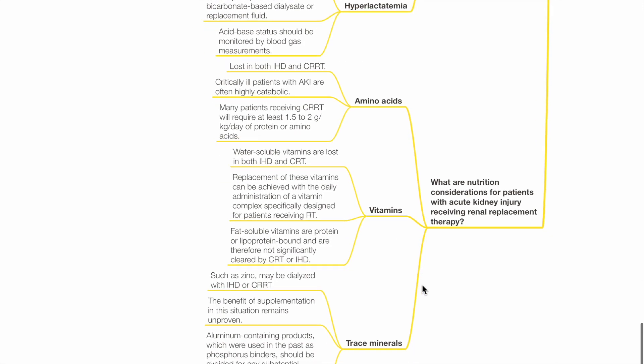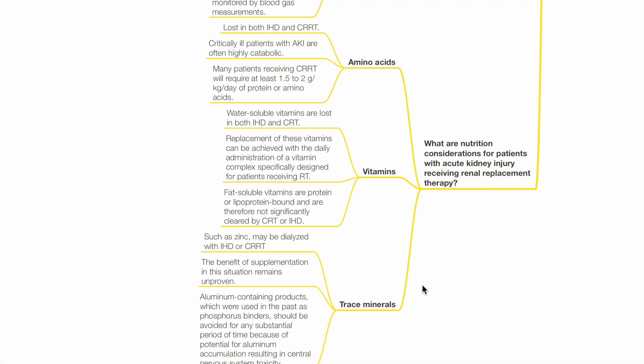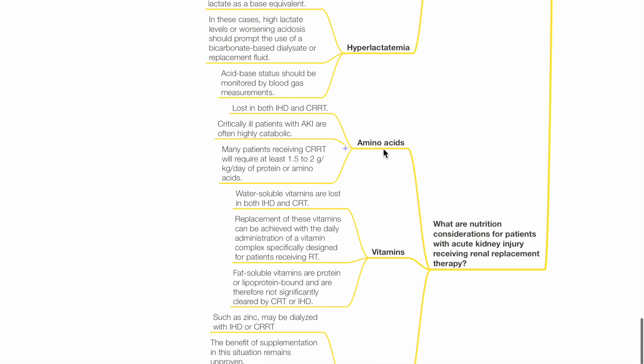What are the nutrition considerations for patients with AKI receiving renal replacement therapy? Amino acids are lost in both IHD and CRRT. Critically ill patients with AKI are often highly catabolic and many patients receiving CRRT will require at least 1.5 to 2 grams per kg per day protein or amino acids.